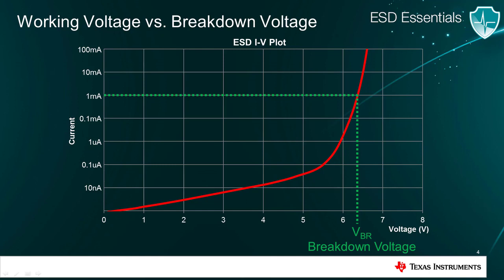At TI, we spec a VRWM, or working voltage, at max 10 nanoamps. This working voltage value can be interpreted as the maximum voltage recommended without excessive leakage. As a result, the interface signal voltage should not exceed VRWM. For example, if your operating signal has a voltage range of zero volts to 3.6 volts, you should select an ESD diode that has a working voltage of 3.6 volts or slightly higher. Anything less, and the diode will leak current during normal operation.